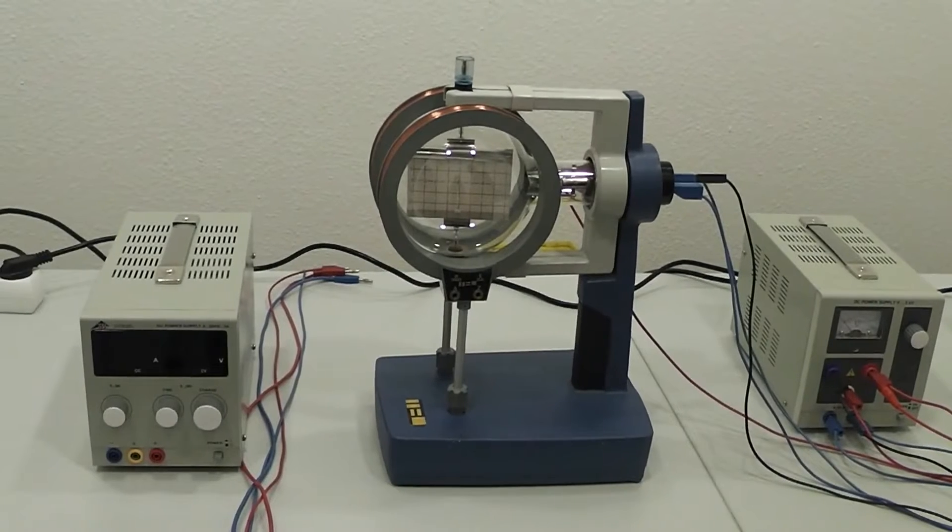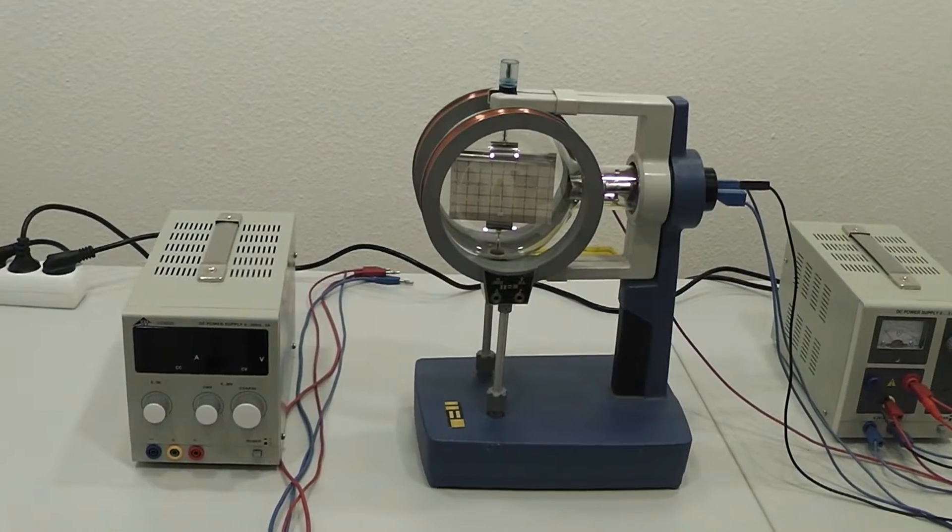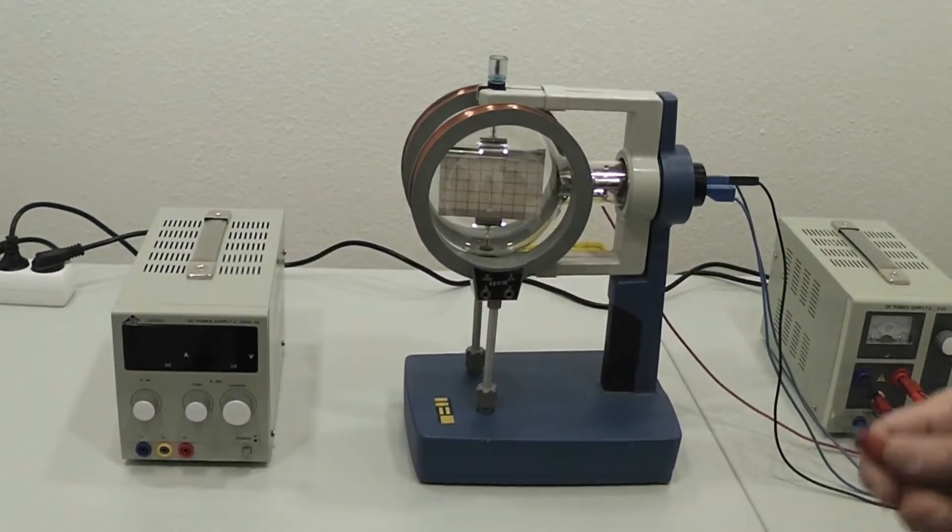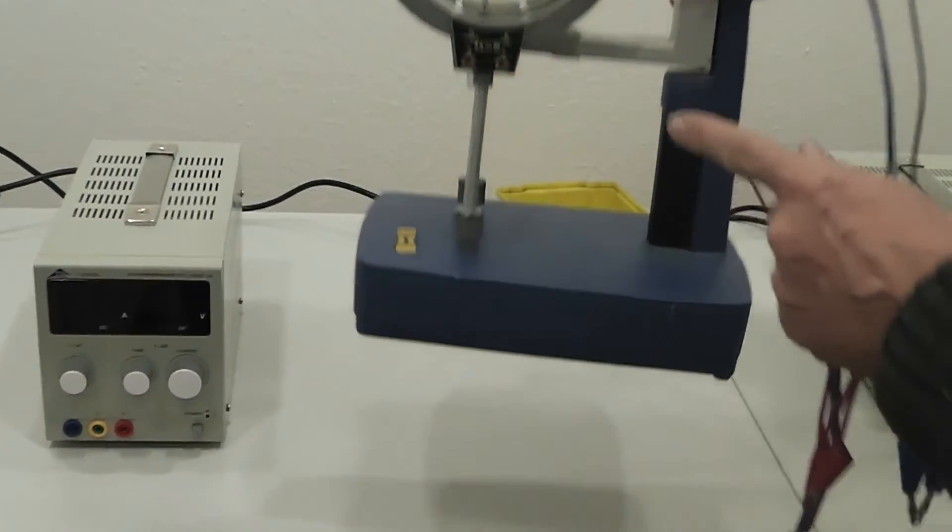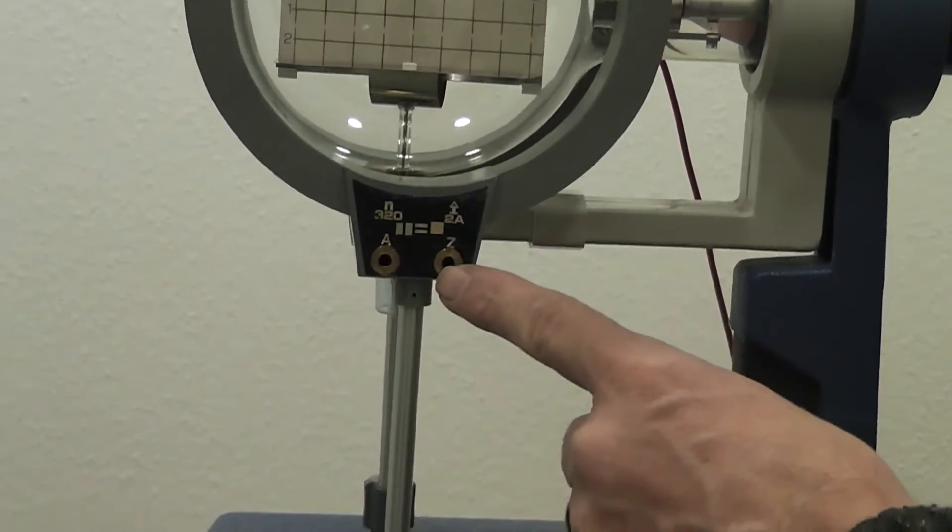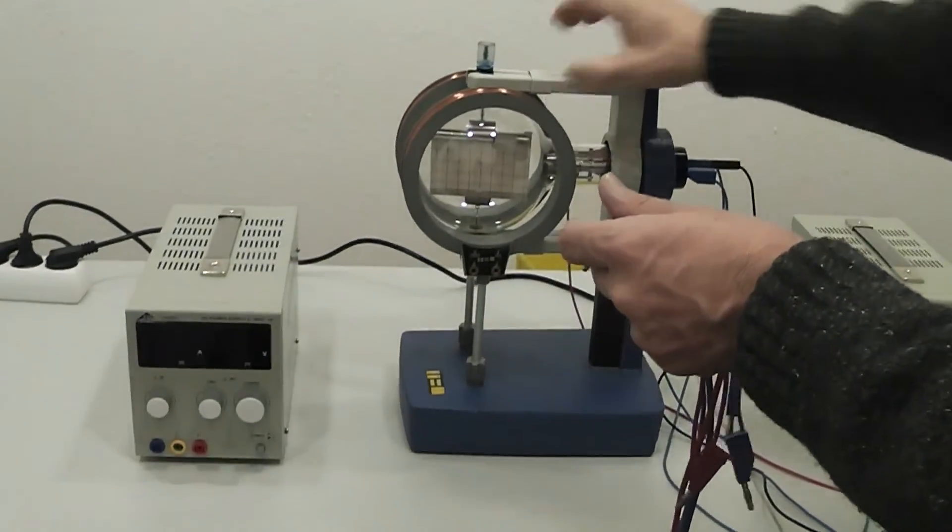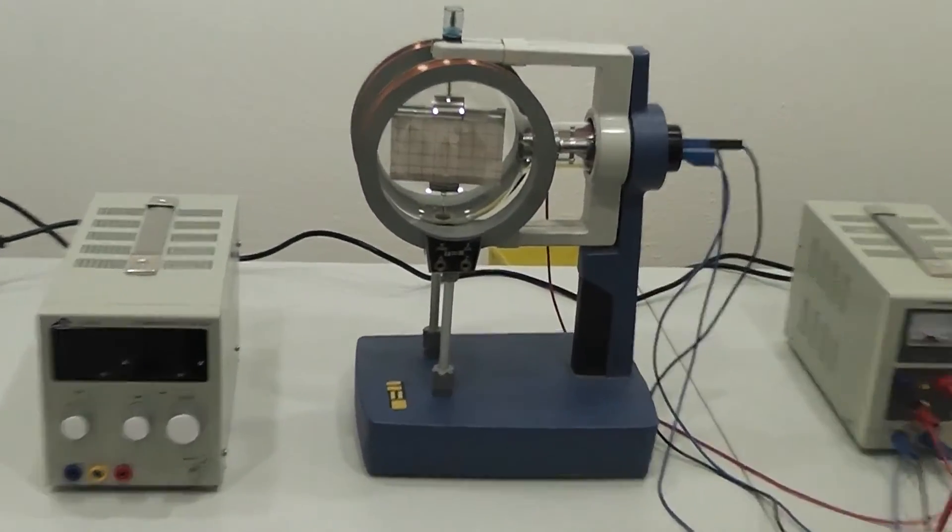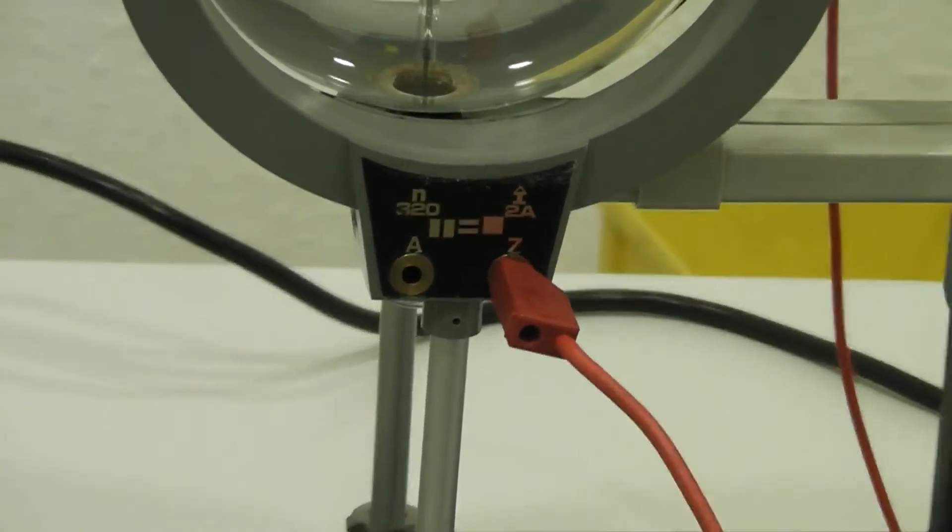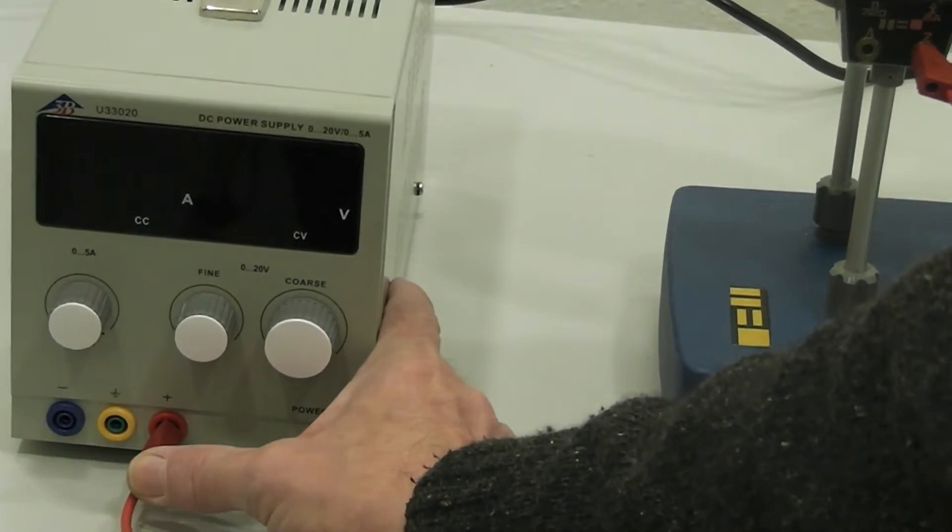Now we want to show you the connection for the magnetic deflection. So you want to make the circuit for the coils. On the coils it's designated A and Z as the end and the beginning of the coil windings. So you go from Z to the plus pole of the 20V power supply.